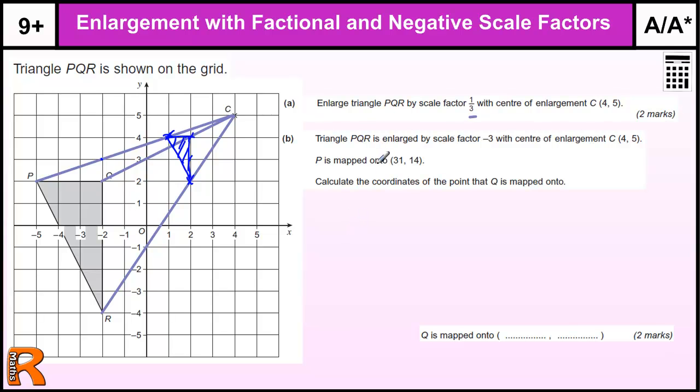Now part B is an unusual one because we can't draw it because it goes off the scale factor minus a third through the same point. So minus scale factors, they're on the other side, so they're going off this way. And it's going to be three times as far away as it is already.